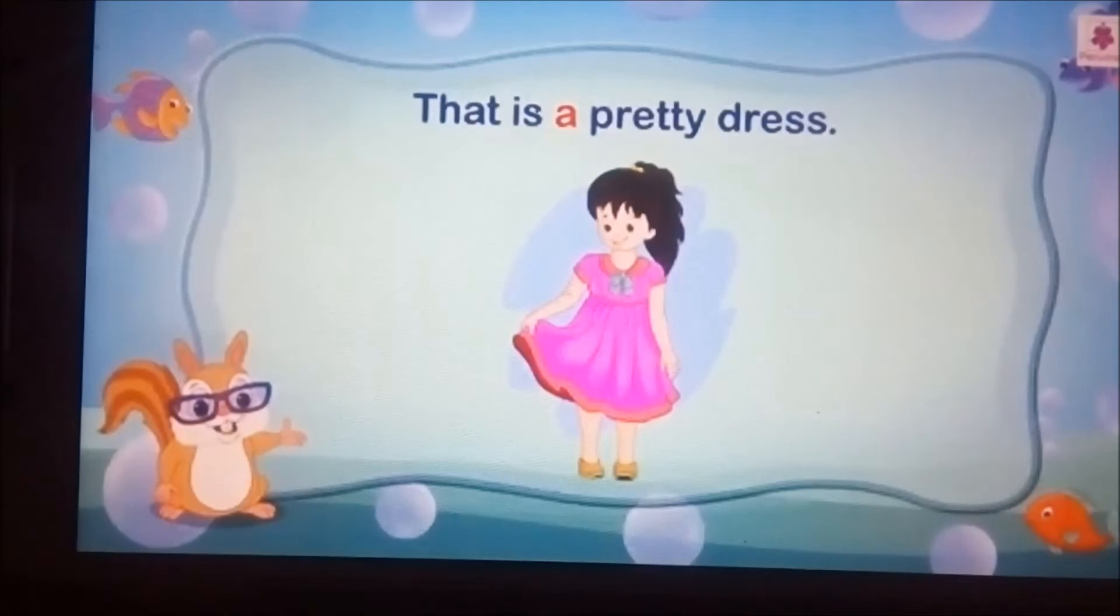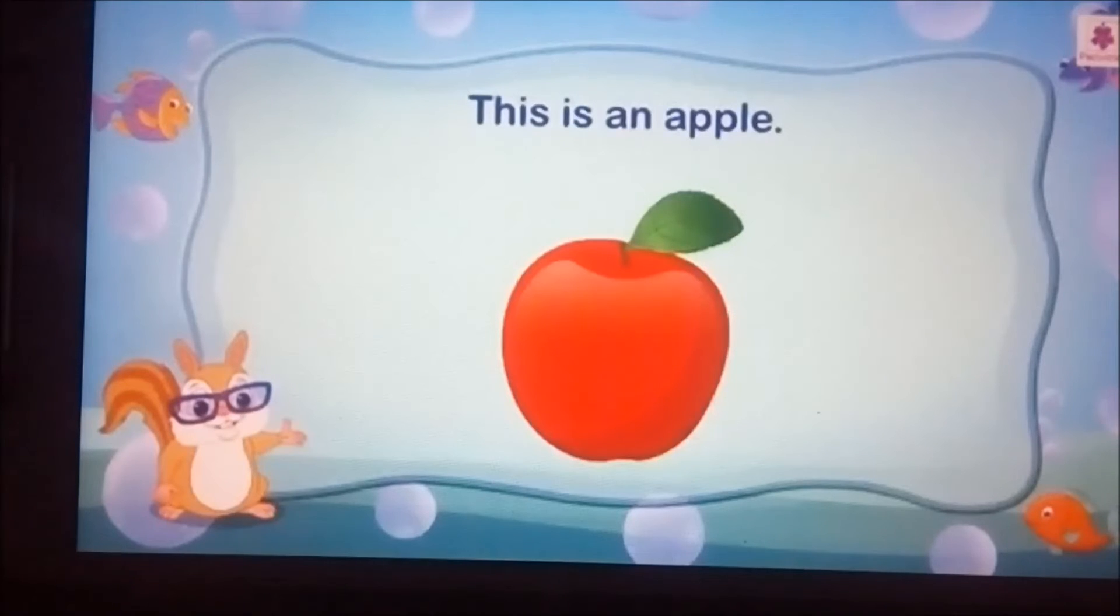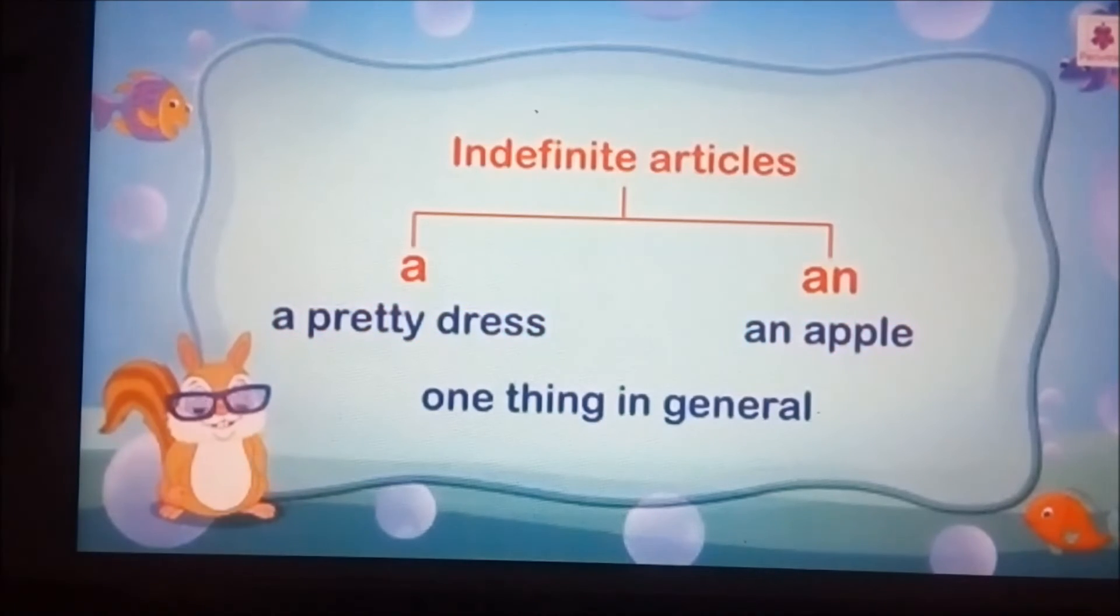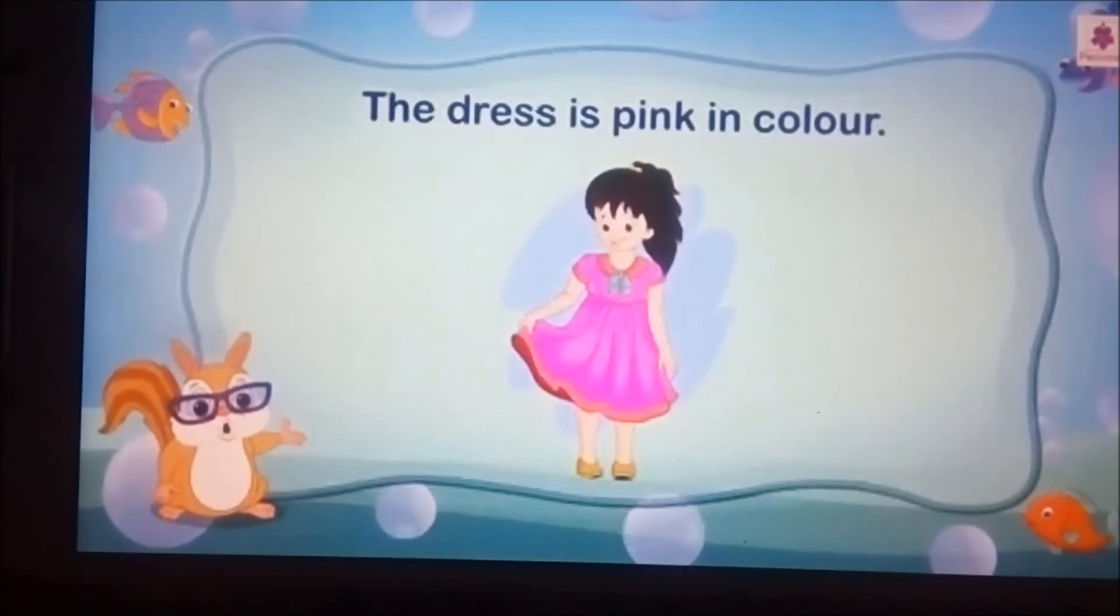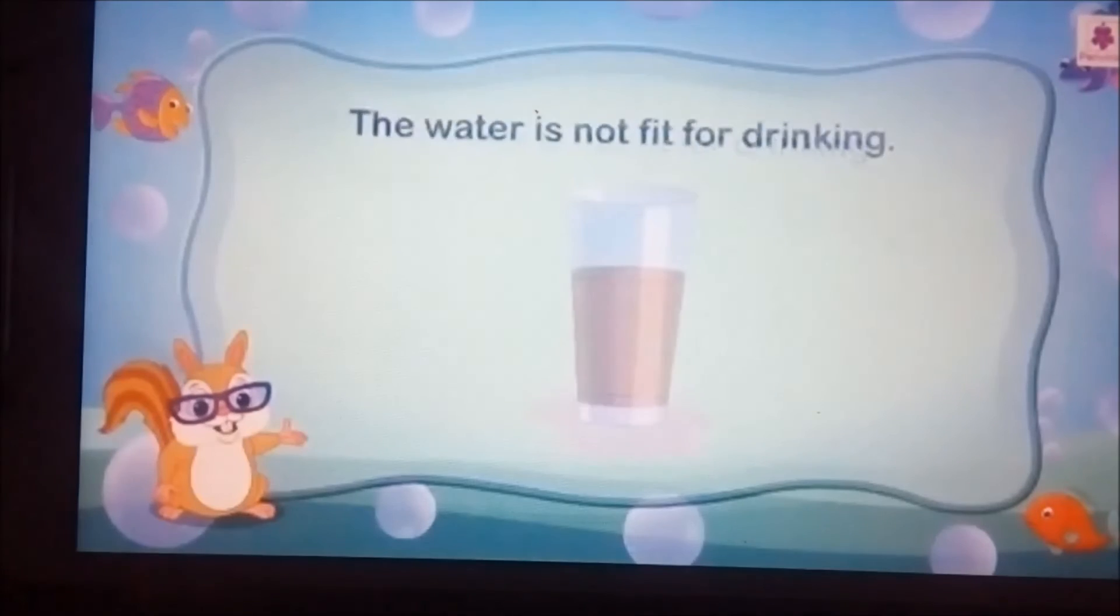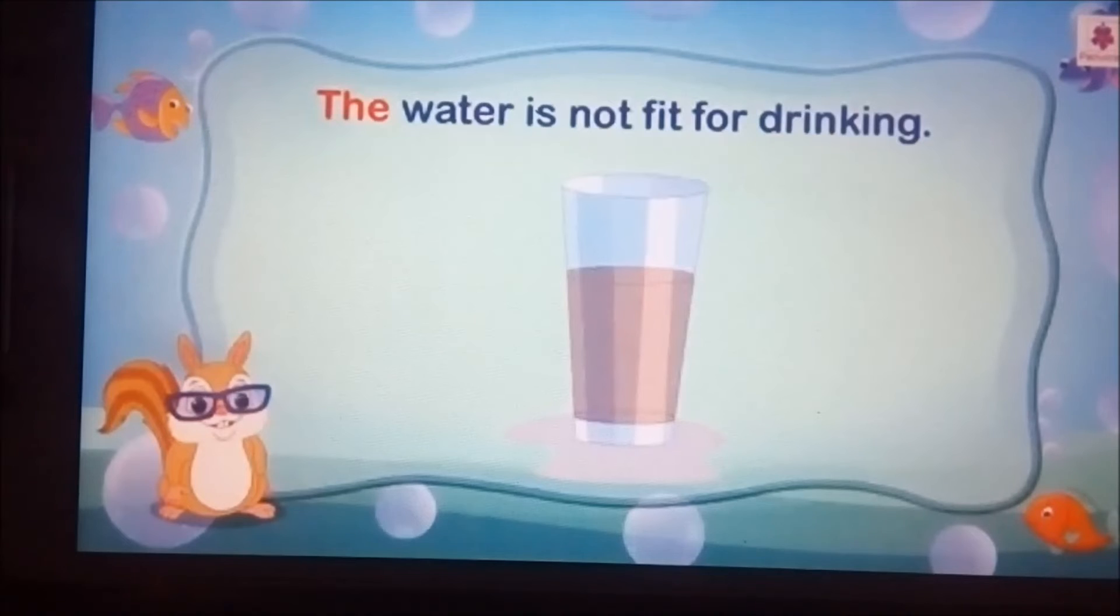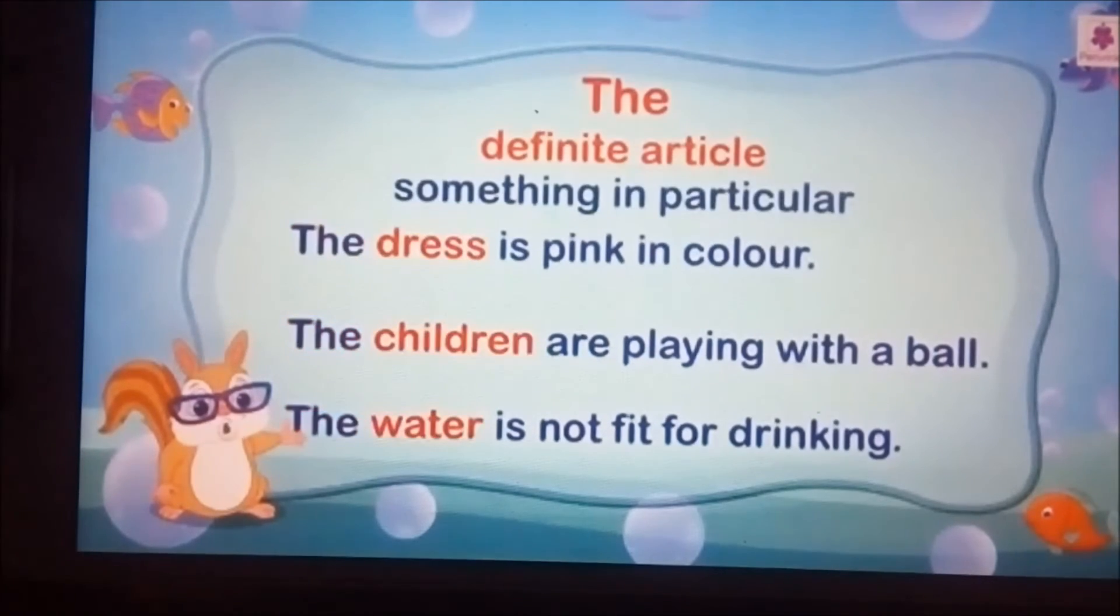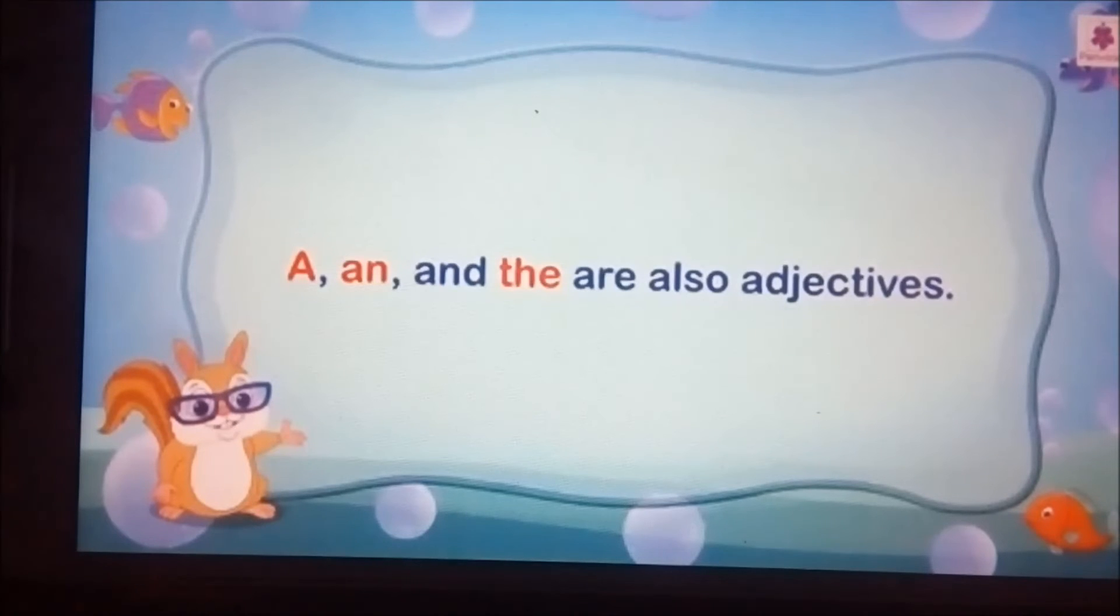Thank you. That is a pretty dress. This is an apple. 'A' and 'an' are indefinite articles. We use them to talk about one thing in general. Now look at these sentences: 'The dress is pink in color.' 'The children are playing with a ball.' 'The water is not fit for drinking.' 'The' is a definite article. Use 'the' to talk about something in particular that may be singular or plural, and countable or uncountable. 'A', 'an', and 'the' are also adjectives. They come before words that name a noun or another adjective.